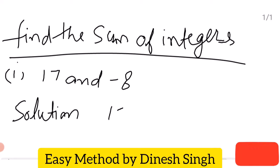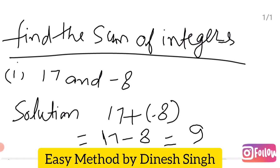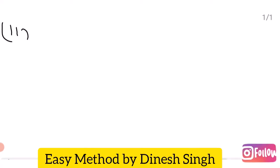Solution: 17 plus minus 8. 17 minus 8 is equal to 9. Answer is 9, it is a positive integer. Second question.